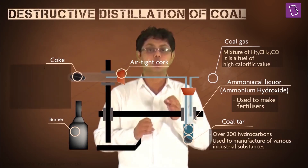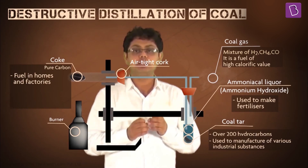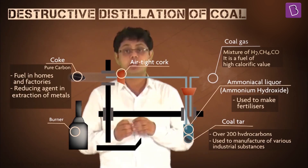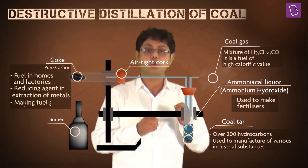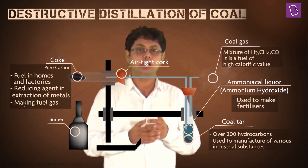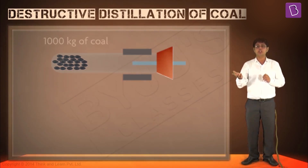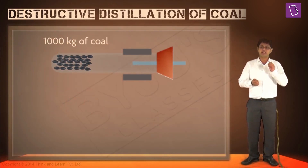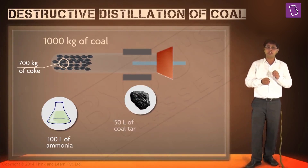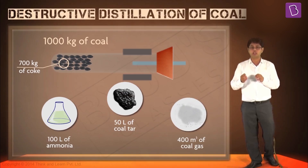Coke is a fuel in its own right, which can be used in homes and in factories, but it is largely used as a reducing agent in the extraction of metals from their ores. It is also used in making fuel gas like water gas, which is a mixture of carbon monoxide and hydrogen. Just to put some numbers across: on the destructive distillation of 1000 kg of coal, you will get 700 kg of coke, 100 liters of ammonia, 50 liters of coal tar and about 400 cubic meters of coal gas.